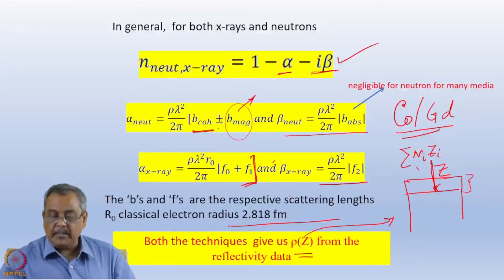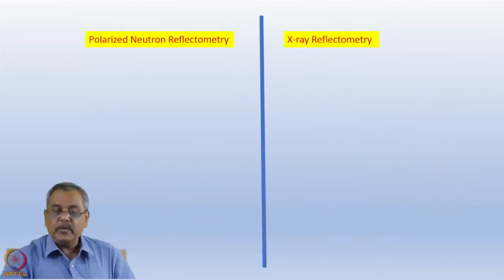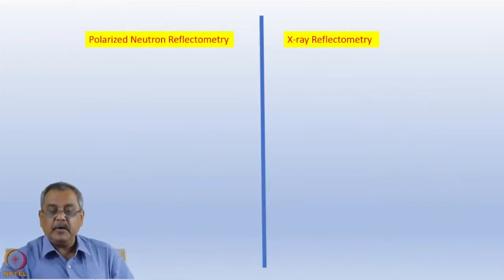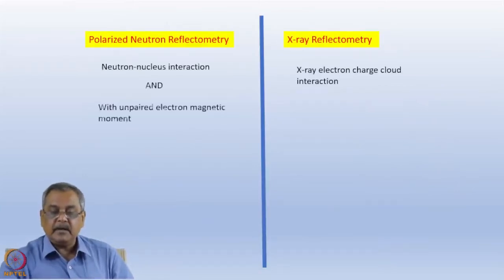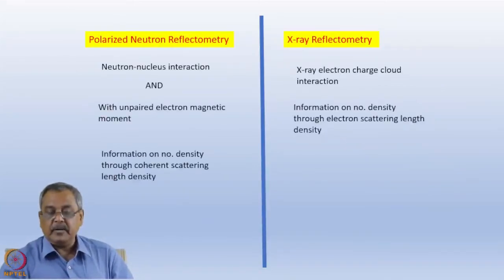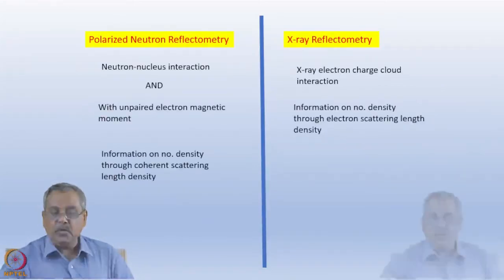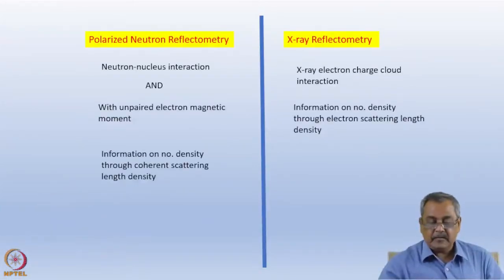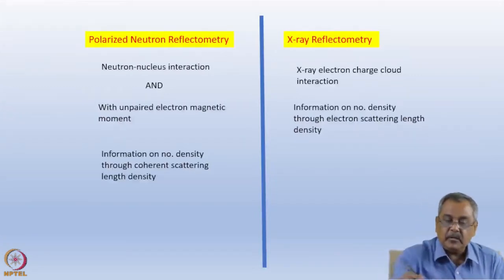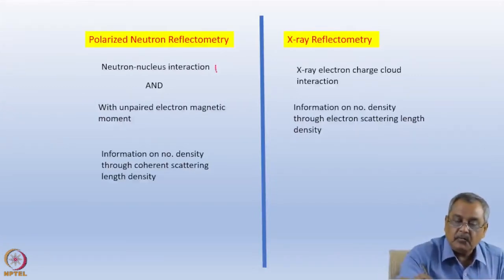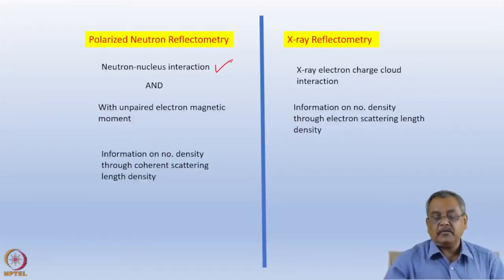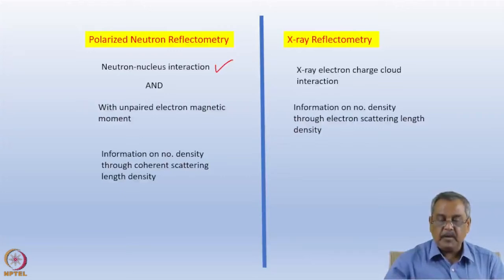Quickly, polarized neutron and x-ray reflectometry are complementary techniques. For unpolarized neutron reflectometry, it depends on neutron-nucleus interaction, and for polarized neutron reflectometry it involves the unpaired magnetic moment.